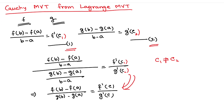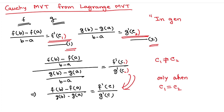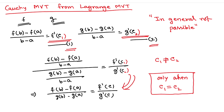So we can conclude Cauchy MVT from Lagrange MVT only when c₁ equals c₂. If these two points are equal, then we can conclude Cauchy MVT from Lagrange MVT. Otherwise, in general, it is not possible. Today we have learned the statement of Cauchy MVT and how to convert between Lagrange MVT and Cauchy MVT.